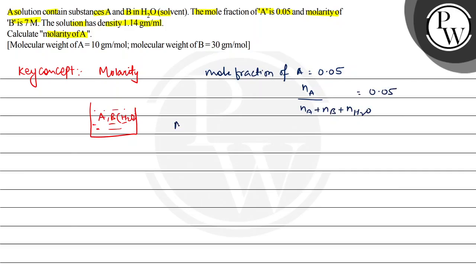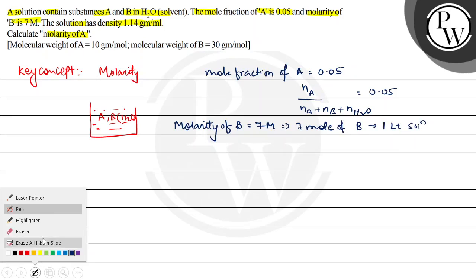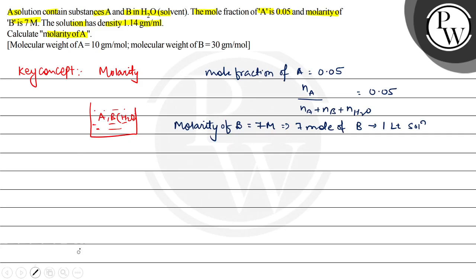And the second data, molarity of B. Molarity of B is 7 molar. This means that 7 moles of B is present in 1 liter solution. So volume of solution is 1 liter.